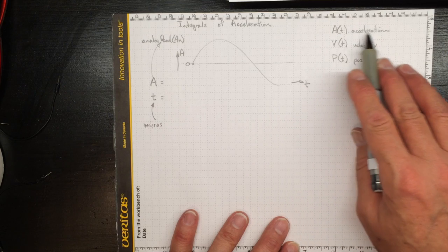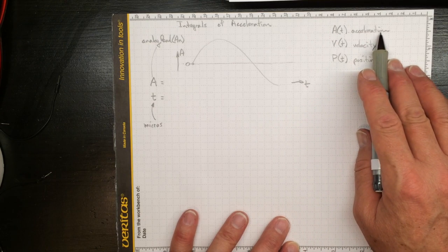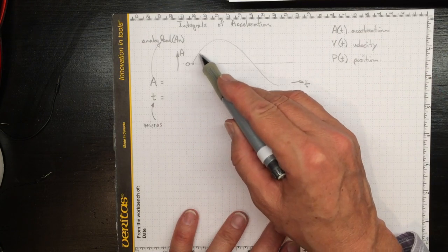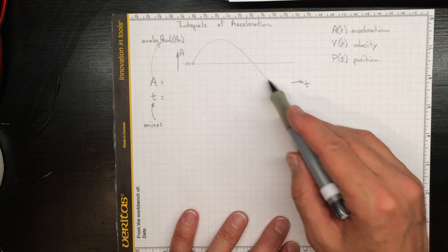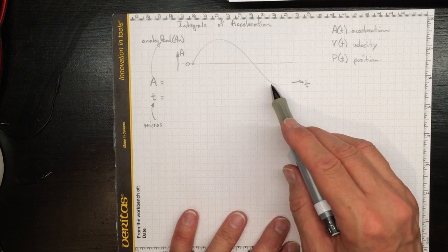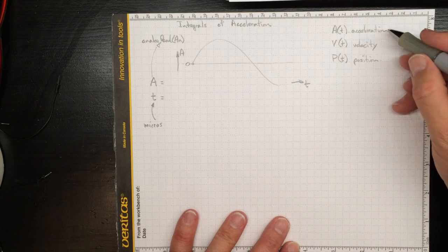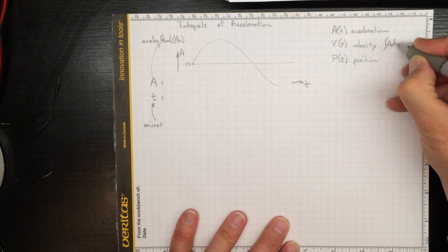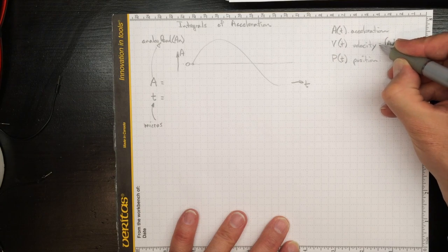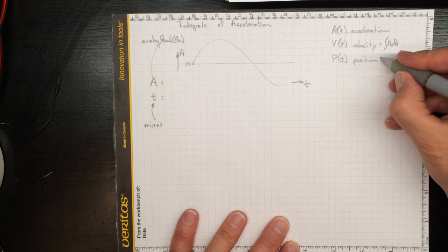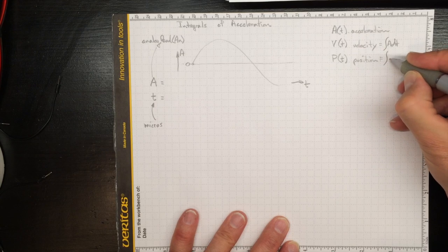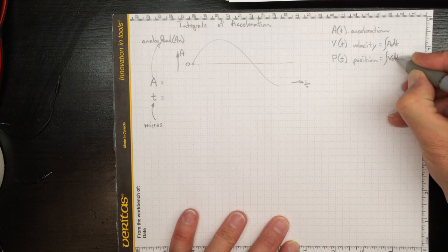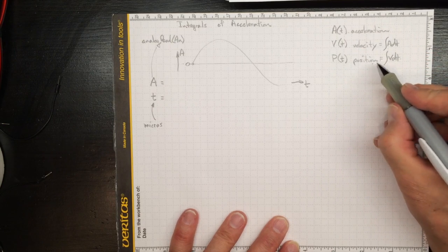On the other hand, we might know the acceleration of the thing we're trying to track. For instance, if the acceleration with time followed a function like this and we knew the analytic function, we could integrate the acceleration over time to get the velocity, and we could integrate the velocity over time to get the position.